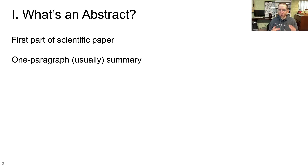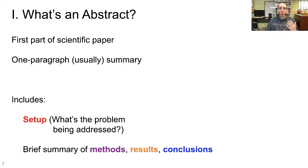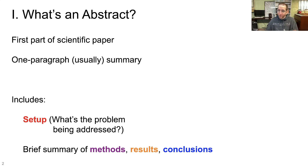The abstract is the very first part. It's usually a one paragraph, sometimes a couple of paragraphs, but usually one paragraph summary of what the rest of the paper is going to be, and it contains a number of specific things. It does a couple of different jobs. You always find some kind of setup in an abstract — the setup is what's the problem being addressed or what's the question we don't have an answer to that the paper is going to try to answer. After the setup, you get brief summaries of the methods, the results, and the broader conclusions. This is all very brief, happening in the span of one paragraph.